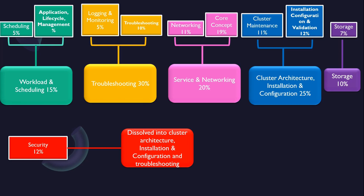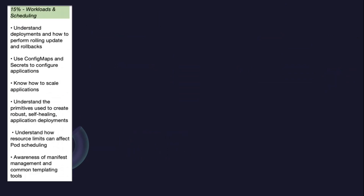In the next chapter I'll show you what you need to do and how you can prepare. For the first section, workloads and scheduling with 15% weightage, you need to understand deployments, config maps, and scaling of applications — including management of applications, creating robust self-healing application deployments, understanding resource limits, how they can affect pod scheduling, and awareness of manifest management.